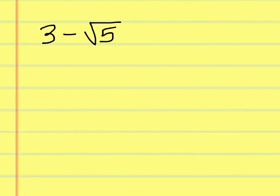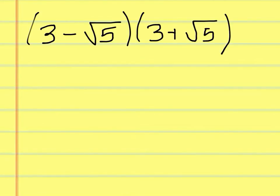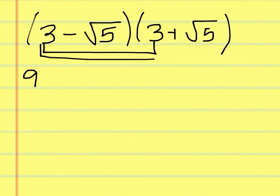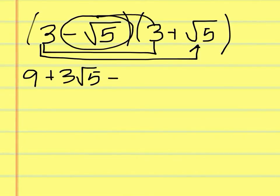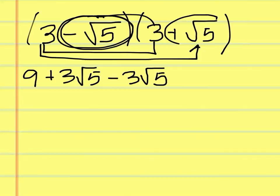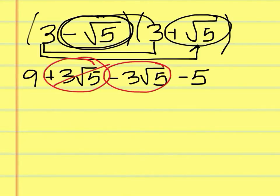Let's say we have 3 minus square root of 5 as a denominator and we wanted to get rid of the radical. We multiply it by 3 plus square root of 5. Multiplying all this out: 3 times 3 is 9, 3 times square root of 5 is 3 square root of 5, minus square root of 5 times 3 is minus 3 square root of 5, and minus square root of 5 times positive square root of 5 is minus 5. Notice that the middle terms cancel out — that's why we do it this way — and you're left with 9 minus 5, which is 4.